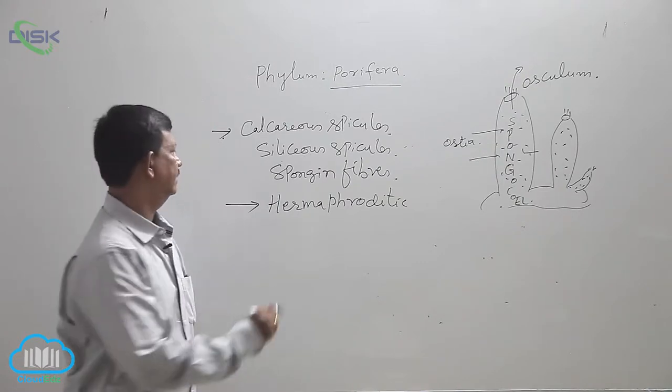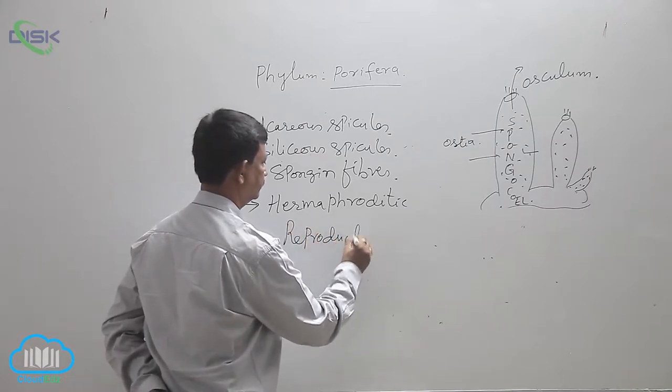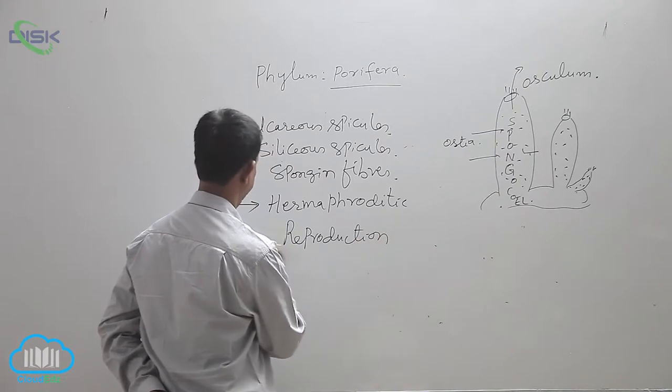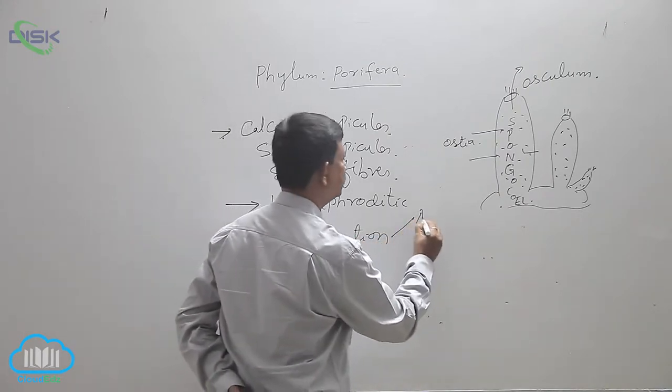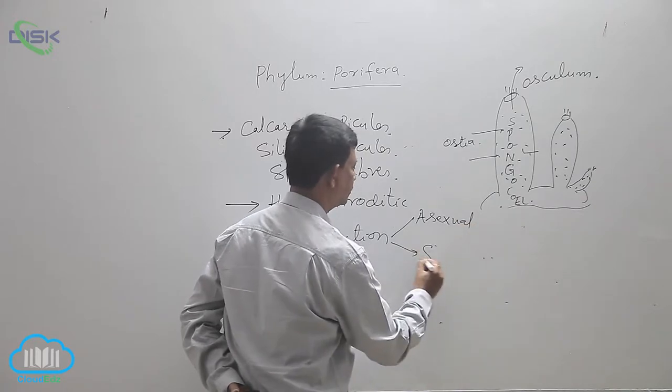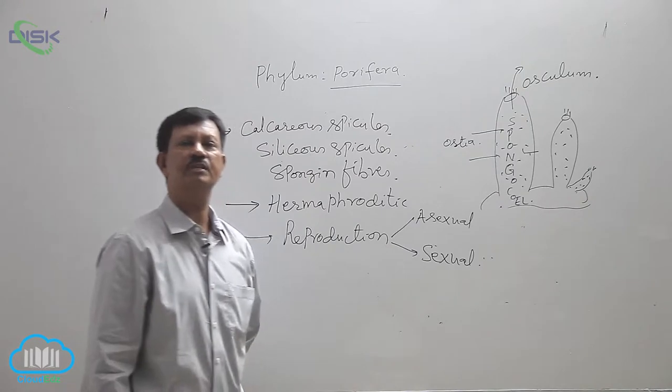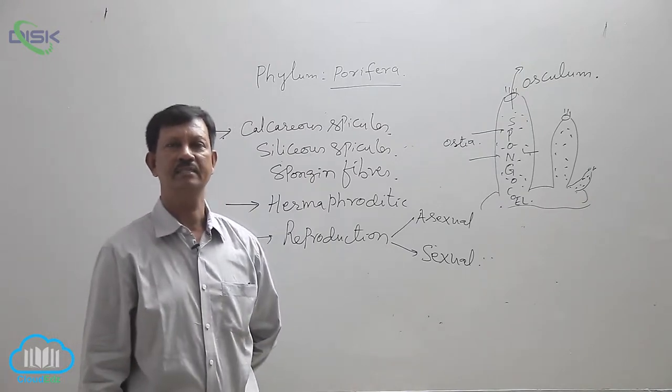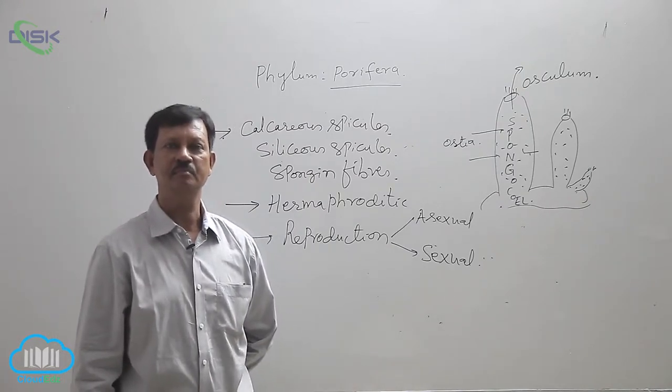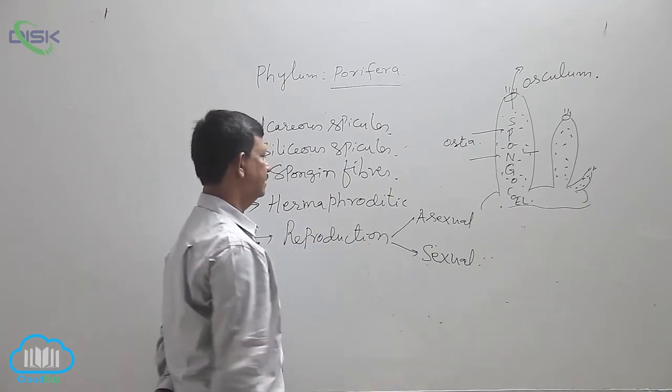Reproduction takes place by two methods. One is asexual reproduction and sexual reproduction. Asexual reproduction takes place by fragmentation and budding. It is a primitive type of reproduction. And sexual reproduction is also present in these animals.